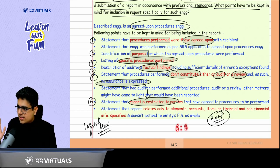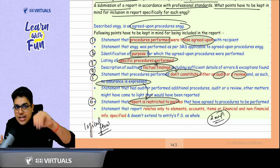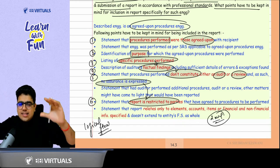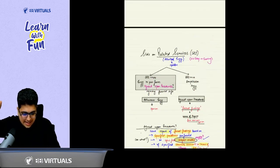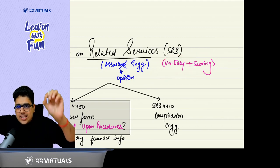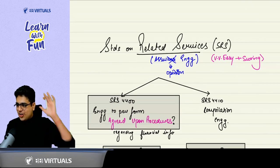6 minutes, 30 seconds. Please tell me how was SRS 4400? Come on. New SA. See, I won't deny the fact that these concepts are new. But didn't I tell you in the beginning that this is very, very easy, very, very scoring if you are going in the right way. Tell me. Gotcha or not gotcha?